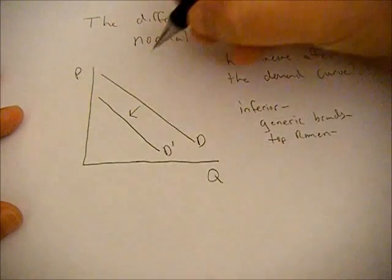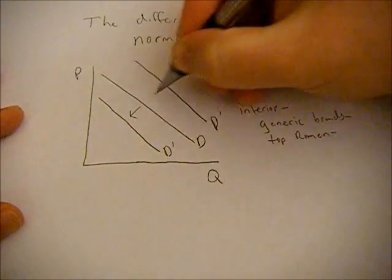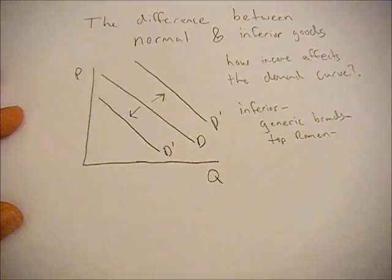However, if your income goes down and it's an inferior good, you're going to see the demand curve shift out or increase.